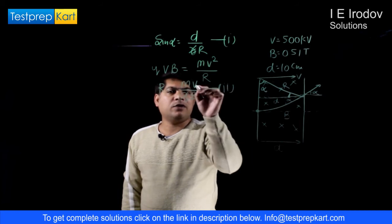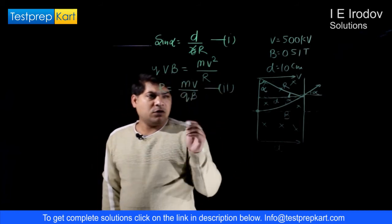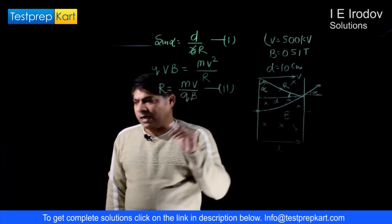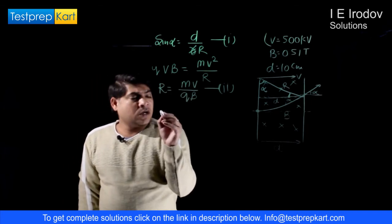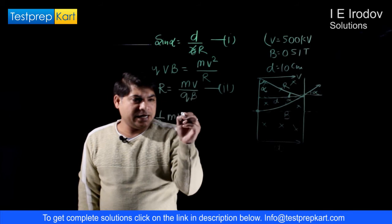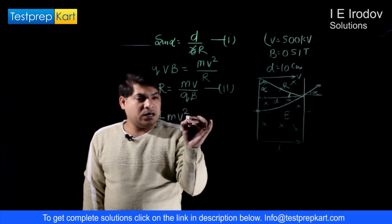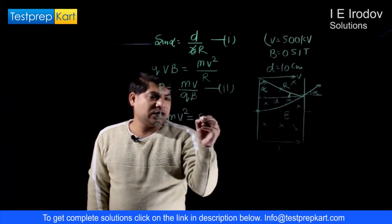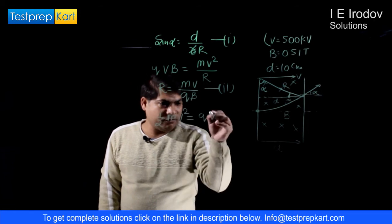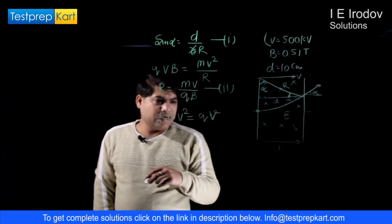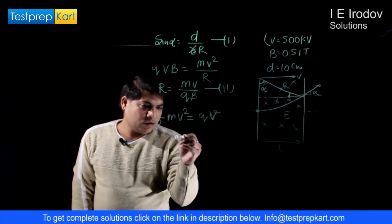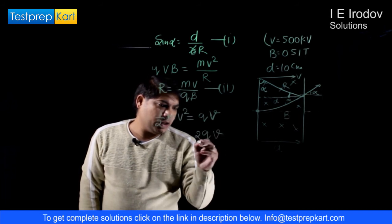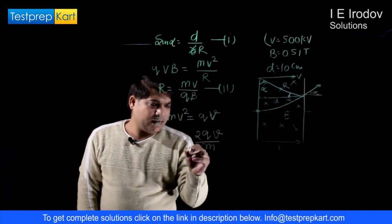Now see, still we don't have information about velocity. So there is an electric field or electric potential, right? So this energy, half MV squared, the kinetic energy obtained by the charged particle, is equal to QV, the energy provided by this field. If charge is Q and the potential is V, from here we can get velocity. Velocity v is equal to square root of 2QV upon M.